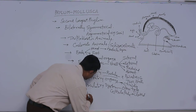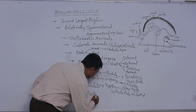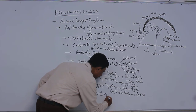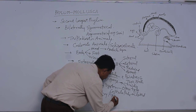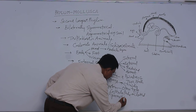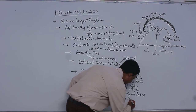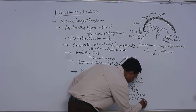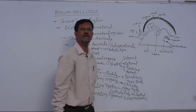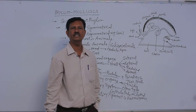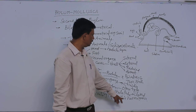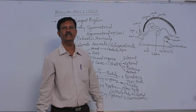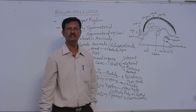The respiratory pigment is known as hemocyanin. Hemoglobin is absent in this phylum, which is why blood is not red in color. It is colorless or light blue in color due to the presence of hemocyanin, which acts as the respiratory pigment and helps in respiration.